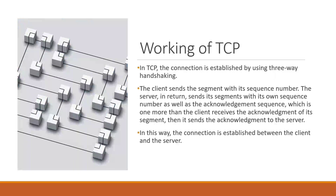In TCP, a connection is established using 3-way handshaking. The client sends a segment with its sequence number. The server in return sends its segment with its own sequence number as well as an acknowledgement sequence, which is one more than the client's. The client receives the acknowledgement of its segment, then sends an acknowledgement back to the server. In this way, the connection is established.